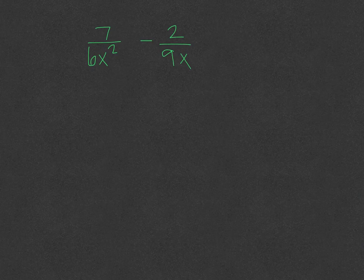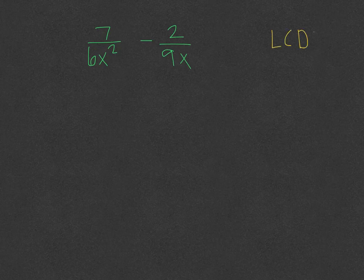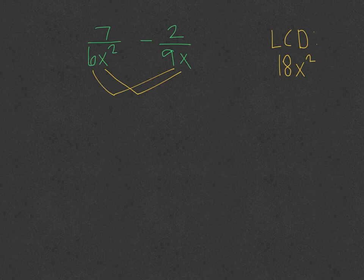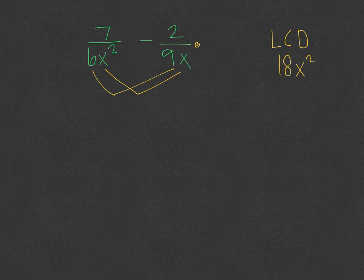Let's say I want to add 7 over 6x squared minus 2 over 9x. The first thing we need to do is find the LCD — that's the trickiest part of this problem. We can find the LCD between the constants: between 6 and 9 it is 18. The LCD between the variables is x squared and x, so x squared would be the variable LCD. What you're trying to do is balance each side out so that they have that LCD.